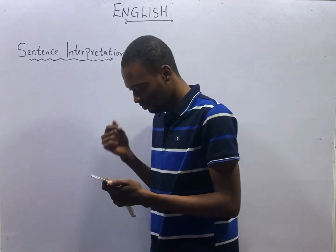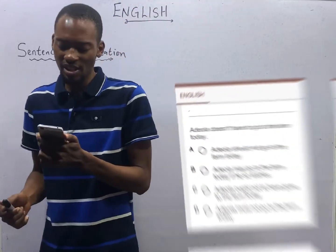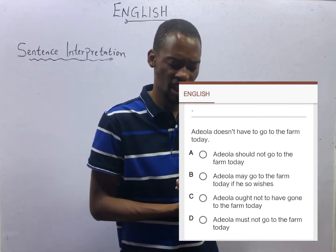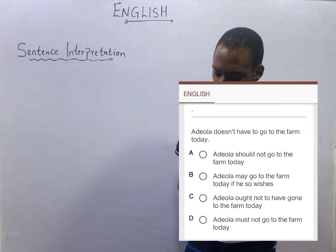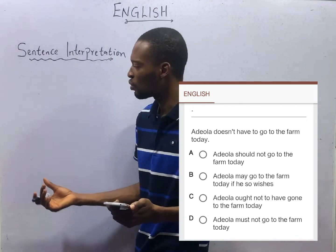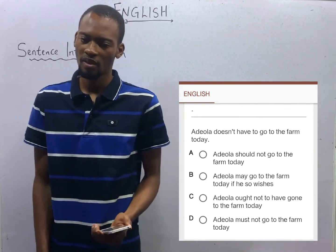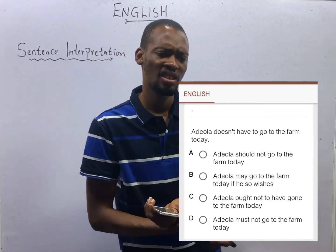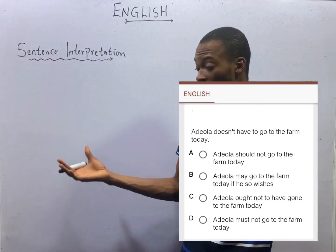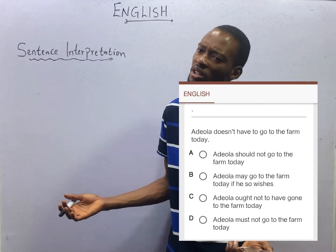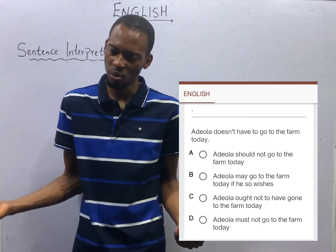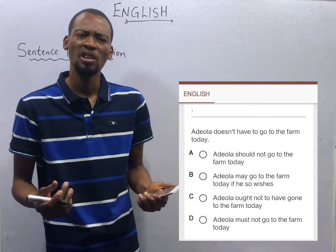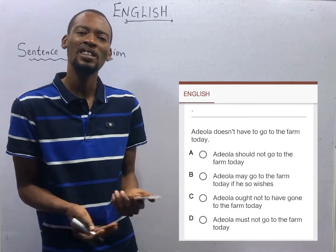Look at this question: 'Adela doesn't have to go to the farm today.' That simply means the answer is in Adela's choice. She may choose to go to the farm, or she may choose not to go. You can't stop her or force her to go. We are not forcing her to go and we are not forcing her not to go. So, Adela may go to the farm if only she wishes.